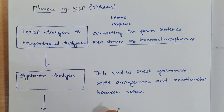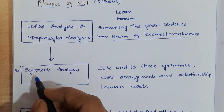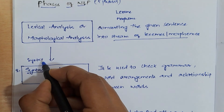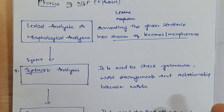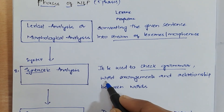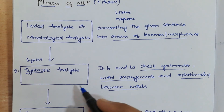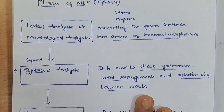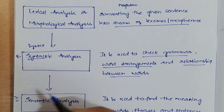The second phase is syntactic analysis. You are aware of what is syntax — syntax is the representation of something. In NLP, it is used to check grammar, word arrangements, and the relationship between the words. This is what syntactic analysis does.